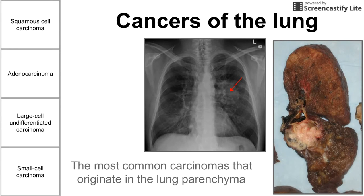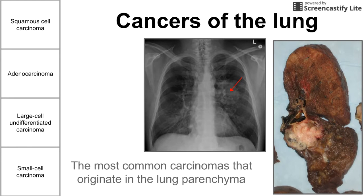They're listed across the left here. Before we begin, you can see a picture of how these cancers might be identified by a chest x-ray and, of course, by autopsy in the gross pathology specimen shown on the right. We're going to be talking about squamous cell carcinoma, adenocarcinoma, large cell undifferentiated carcinoma, and small cell carcinoma.